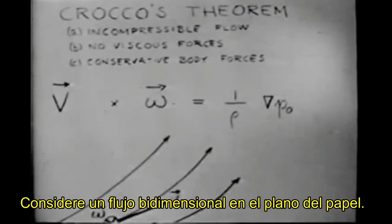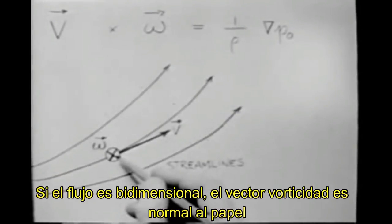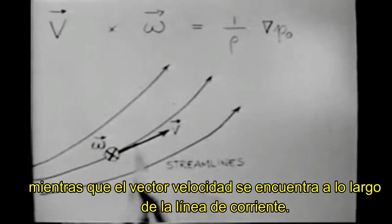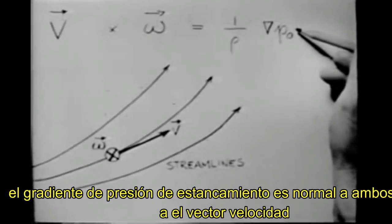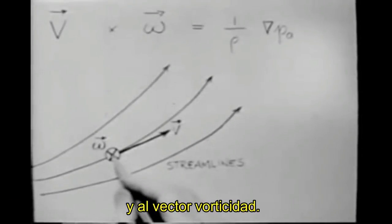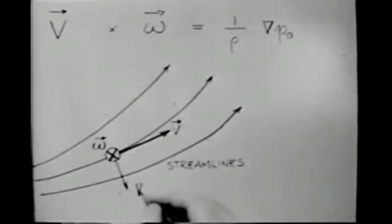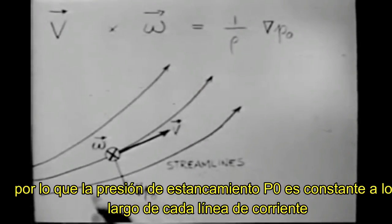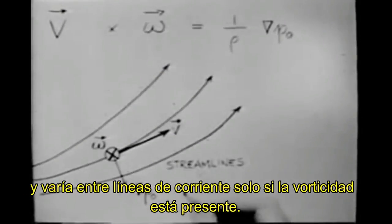Consider a two-dimensional flow in the plane of the paper. If the flow is two-dimensional, the vorticity vector is normal to the paper, while the velocity vector lies along the streamline. According to Crocco's theorem, the gradient of stagnation pressure is normal to both the velocity vector and the vorticity vector — that is, in the plane of the paper. So the stagnation pressure p_0 is constant along each streamline and varies between streamlines only if vorticity is present.